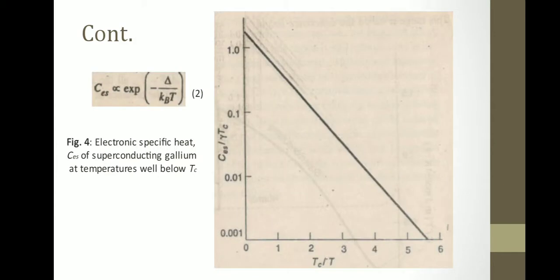So here we have the specific heat proportional to the exponent of minus delta by KbT, equation 2. And this is the electronic specific heat Ces of superconducting gallium at temperatures well below Tc. So here this is the electronic specific heat diagram.